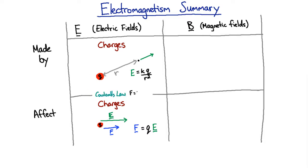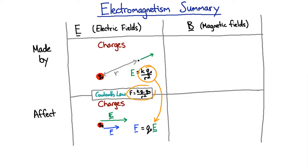If you have a charge Q1 and a charge Q2 a distance R apart, then the force between them is given by Coulomb's Law. You see that's exactly the same as what you get if you talk about the electric field of charge Q1 and the effect of that electric field on charge Q2. So Coulomb's Law is not an extra law — it's just the effect of the electric field of one charge on a second charge.